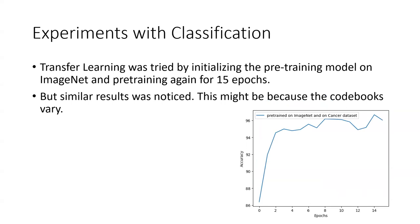We thought maybe we can transfer learn this. We tried transfer learning for 15 epochs but similar results were noticed. We came to the conclusion that this might be because the codebooks vary. Our VQ-KD was specially trained for our cancer dataset whereas the ImageNet codebook was trained for usage in ImageNet dataset.